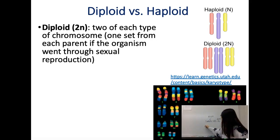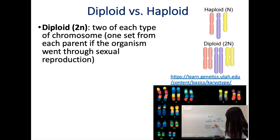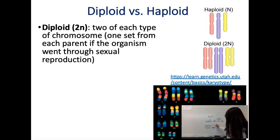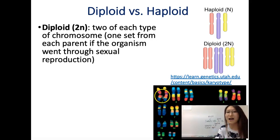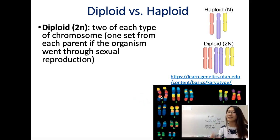We also have gametes, also called sperm and eggs. Gametes are the reproductive cells — the big category is gametes, and the subcategory would be sperm and eggs. Gametes have half the amount of chromosomes compared to somatic cells, so instead of 2N we have N, and we call that haploid. A haploid cell has only one of each chromosome instead of two.